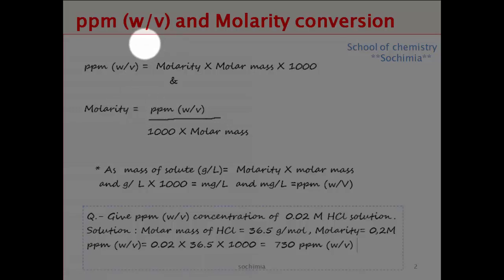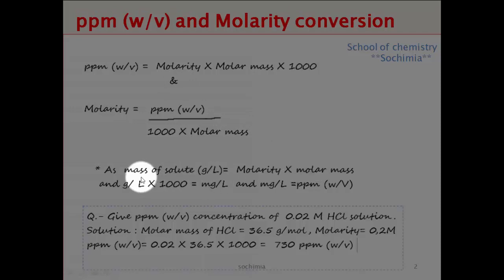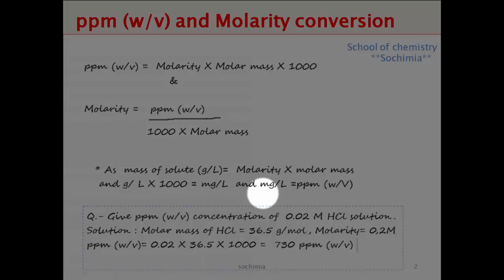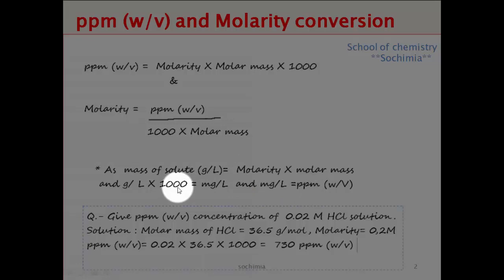Molarity is number of moles per liter, and molarity multiplied by molar mass gives us number of grams of solute per liter of solution. From grams per liter, we can calculate milligrams per liter by multiplying by 1000. Milligrams per liter, as we have seen in our last tutorials, are equal to parts per million. So molarity multiplied by molar mass multiplied by 1000 gives us parts per million weight by volume.